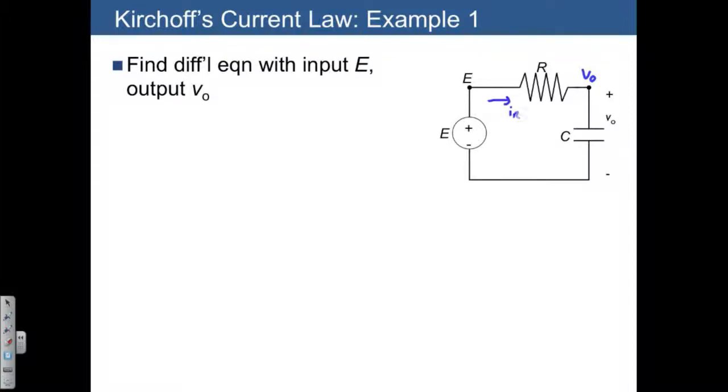Similarly, we have IR and IC, which are the currents going through the resistor and the capacitor. If we sum the currents going into that junction, that's just going to give us IR minus IC equals zero. It's no surprise that the current going through the resistor has to be equal to the current going through the capacitor.